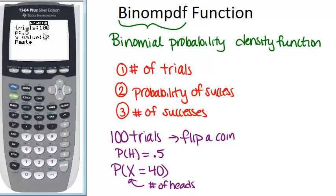Trials: we want 100 trials of flipping a coin. P stands for the probability of success, so that's 0.5. The x value is how many successes we want. So we want x to equal 40. And then we're just going to go down to paste.